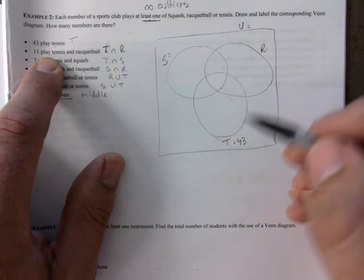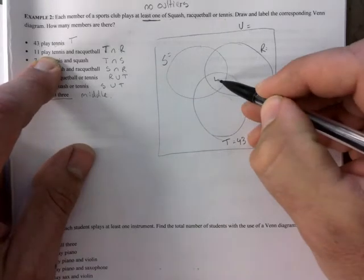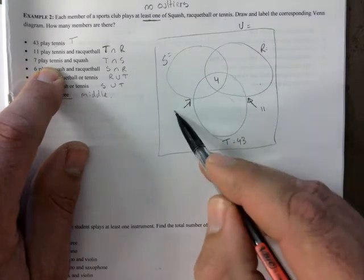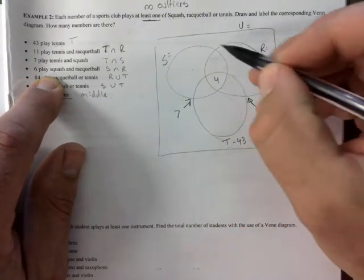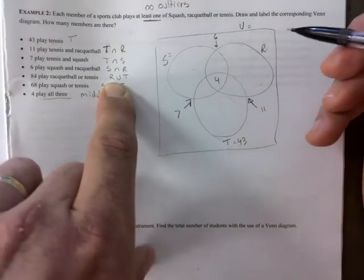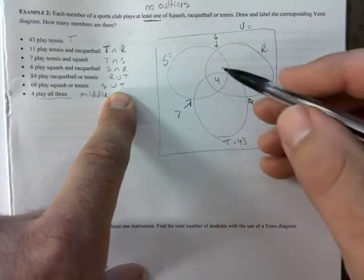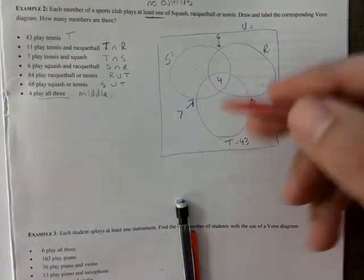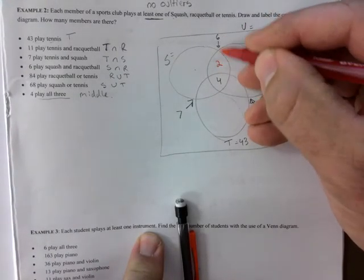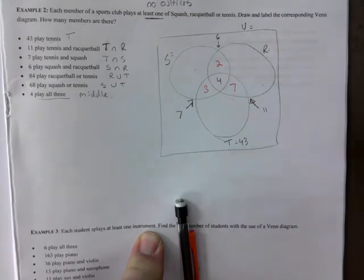11 play tennis and racquetball. So where is T and R? It's right here. So we're going to put that 11 there. I put the middle in there already. Seven play tennis and squash. So this is seven. Six play squash and racquetball. So this is six. 84. I'm not going to put that anywhere. 68 squash or tennis. I'm not going to put that anywhere just yet. So now let's fill it in. So I'm switching to pen. Because now that I've gathered as much information as I can, I put two in here, right? Because two and four add up to six. This would be three. And this would be seven. So I have that figured out.